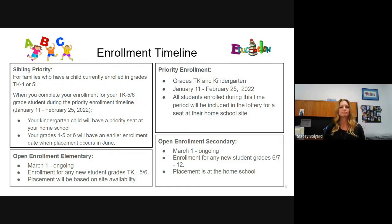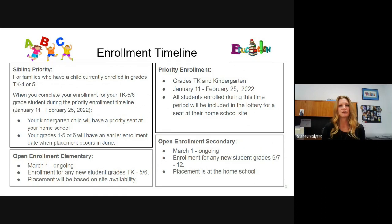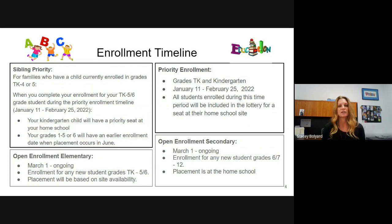Here's our enrollment timeline. The first piece is sibling priority, which is based on families who currently have students enrolled in elementary school. The goal is to keep siblings together so parents aren't driving kids to different schools. If you have a child currently enrolled in Fremont in grades TK to 4 or 5, then for next year we would look at a sibling priority for your incoming student for 2022-23. That priority window is January 11th through February 25th. If your new child is in kindergarten and you enroll during that window, they will have a priority seat at their homeschool.